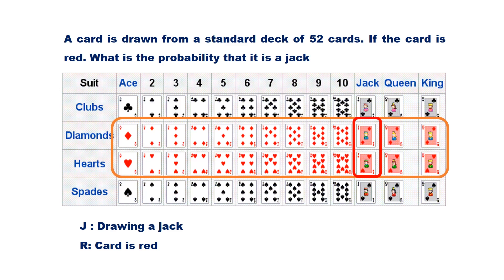Out of 26 red cards, 2 cards are Jacks. Hence, the probability of drawing a Jack given the card is red is 2/26 = 1/13.